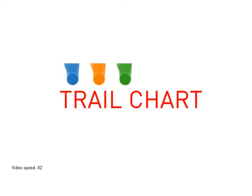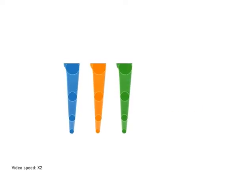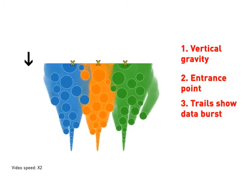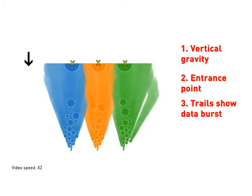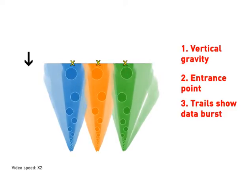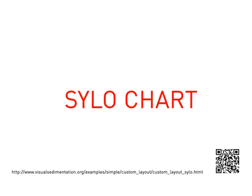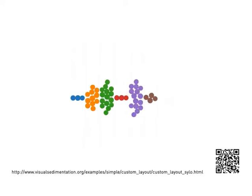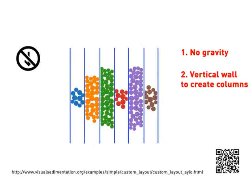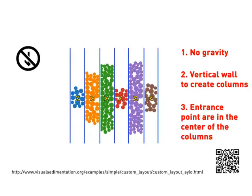Exploring generativity: the trail chart uses vertical gravity and entrance points at the top — trails show the data burst over time. The silo chart uses no gravity; vertical walls create columns, and entrance points are in the center of each column.